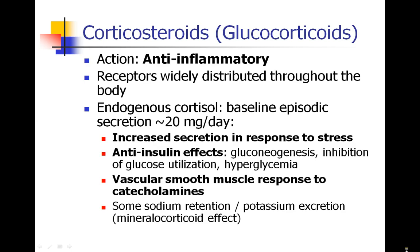We're going to start by talking about steroids, specifically corticosteroids, also known as glucocorticoids. These are steroids that are generally synthesized in your adrenal gland, in your adrenal cortex. They are anti-inflammatory hormones, and the receptors for these steroids are widely distributed throughout your body. Your adrenal gland secretes cortisol continuously, about 20 milligrams per day as a baseline secretion, but there are many things that occur during the day that will increase your secretion in response to stress and other stimuli.